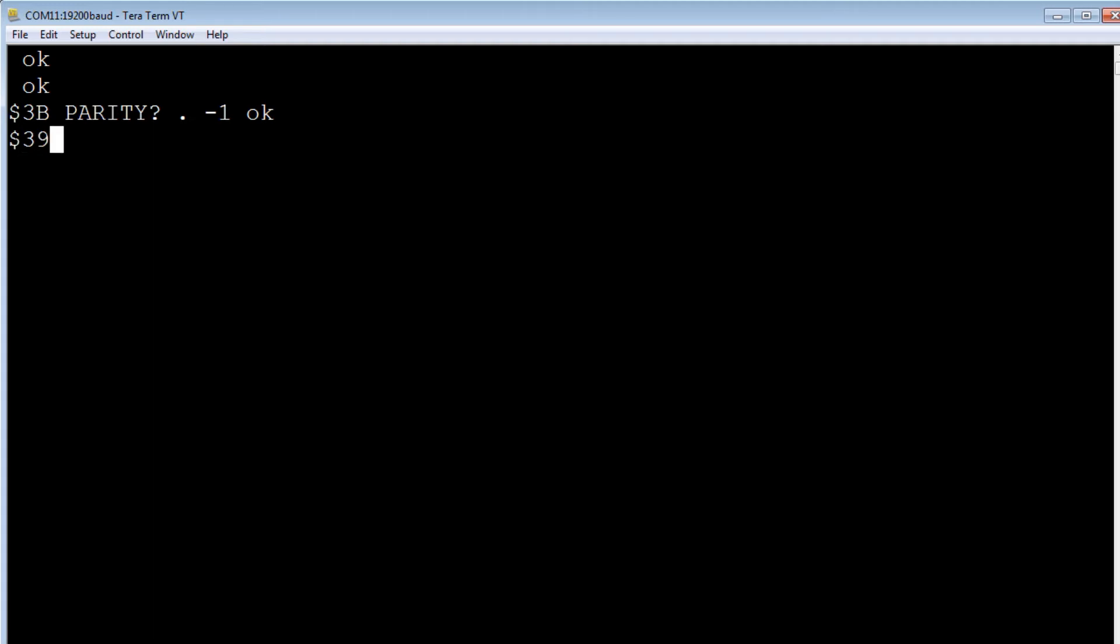Now in our example, we use also 3, 9. So we could try 3, 9. 3, 9 parity question mark. And see where that returns. That gives us a 0. So there's the even amount of 1s in the byte value 3, 9.